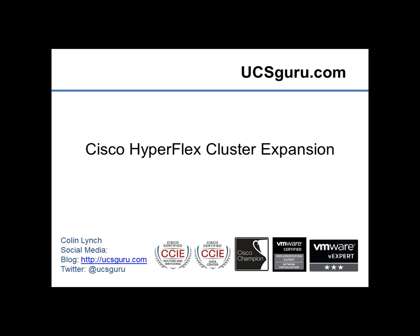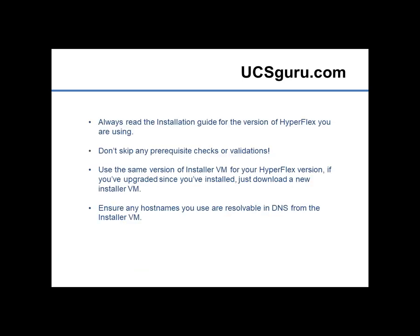Hello and welcome to another video from UCSGuru.com. My name is Colin Lynch and this video will continue on from the HyperFlex cluster installation video previously recorded. We'll be expanding that cluster from five converged nodes to six nodes. This is a fairly automated wizard-driven process, but to ensure a successful expansion, always read the cluster expansion section in the admin guide, ensure the installer VM matches your HyperFlex cluster version, don't skip any prerequisite checks, and ensure any names you'll use are resolvable in DNS with a valid time source available.